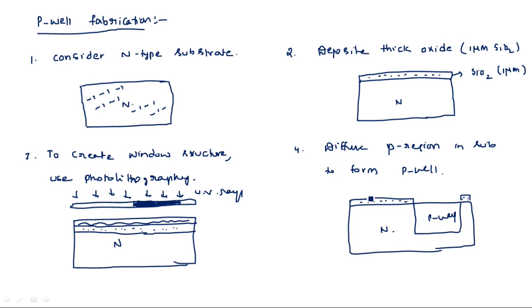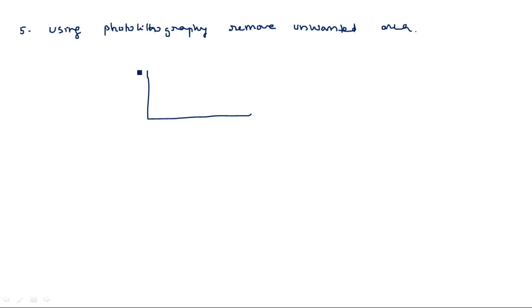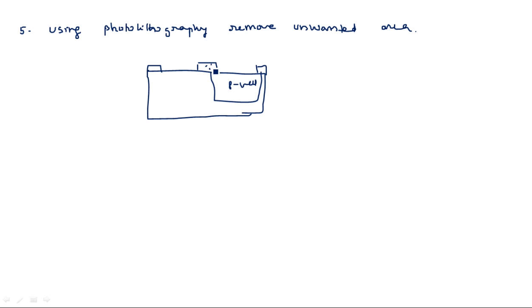In order to create a PMOS transistor on the N-type substrate, we remove the oxide layer in that area using photolithography — removing unwanted areas. After removal, we have the oxide layer remaining on either side, with the P-well region in the middle and the N-type substrate visible.